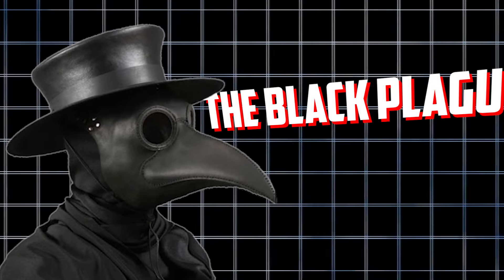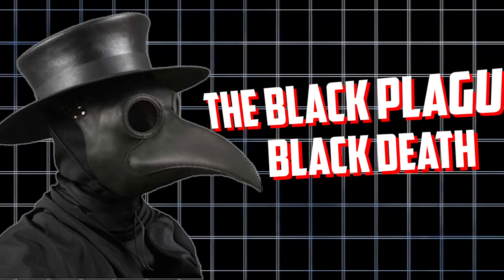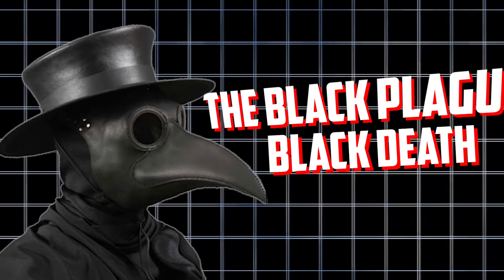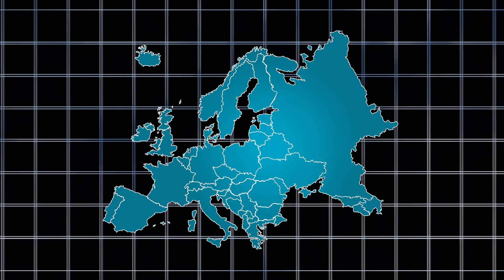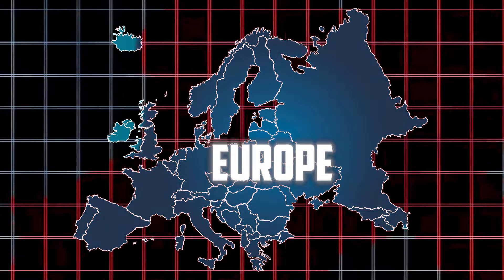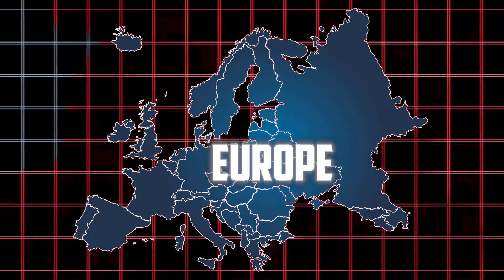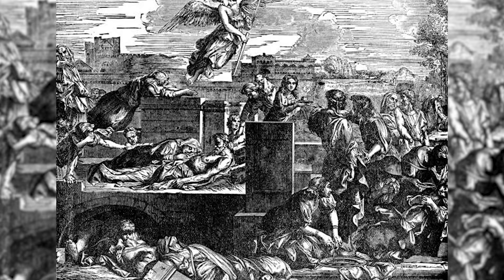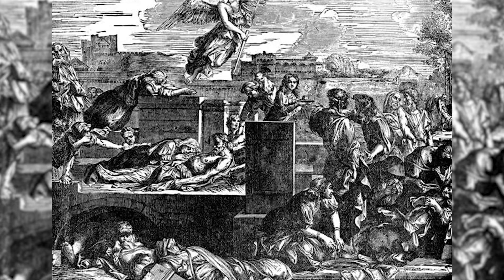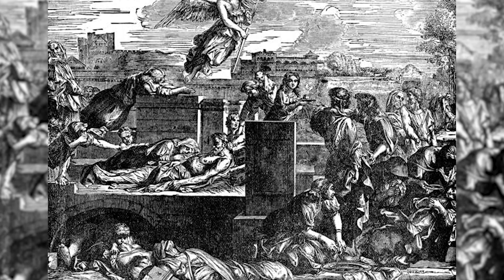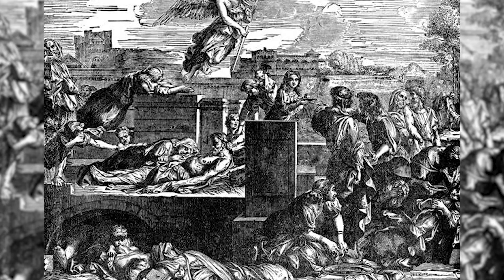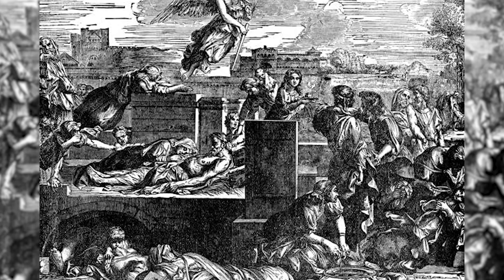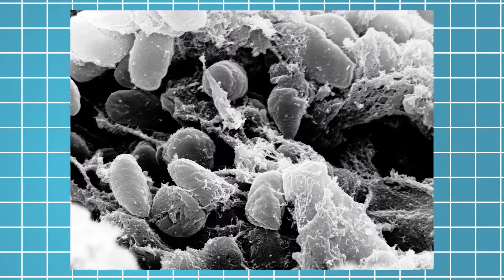The Black Plague, also known as the Black Death, was a deadly disease that spread across Europe in the 14th century. It's one of the most devastating pandemics in human history. This disease was caused by a bacteria called Yersinia pestis.